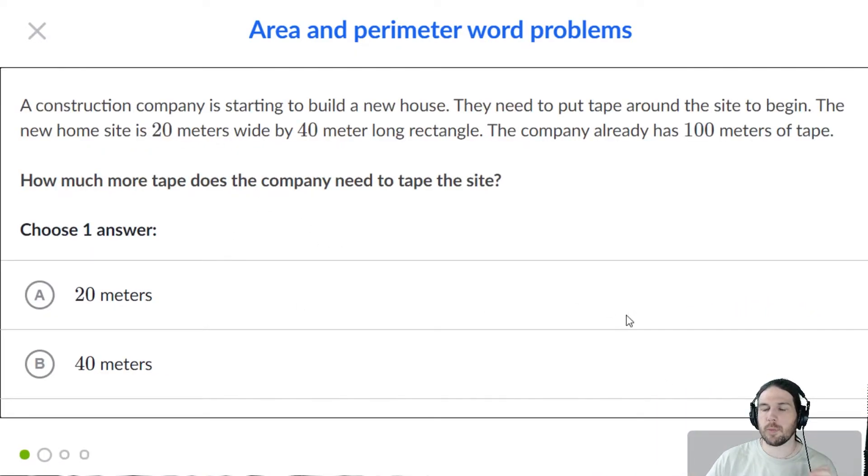A construction company is starting to build a new house. They need to put tape around the site to begin. If they're putting it around the site, sort of try to lean on the idea that perimeter means all the way around.